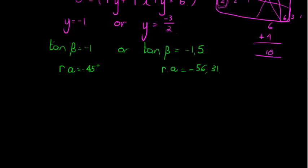That's my reference angle, and the very nice thing about tan is that it only has one general solution, and that is β is equal to your reference angle, in this case negative 45, plus 180 times k. That's where the difference comes in, that's why it only has one general solution. But for this case, we've got two reference angles, so we have two general solutions. So this time β is equal to negative 56.31 plus 180 times k.